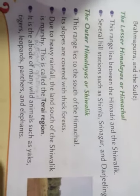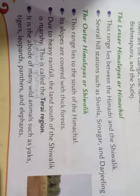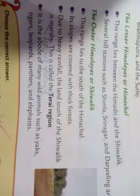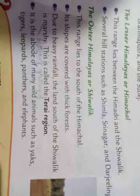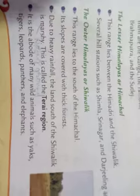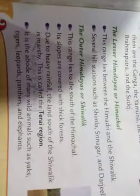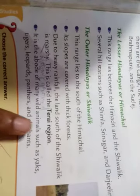The third range is the Outer Himalayas or Shivalik. This range lies to the south of Himajal. In this place, thick forests and heavy rainfall are found, which is why this place is called the Terai region. Many wild animals live here, such as Yak, Tigers, Leopards, Panthers, and Elephants.